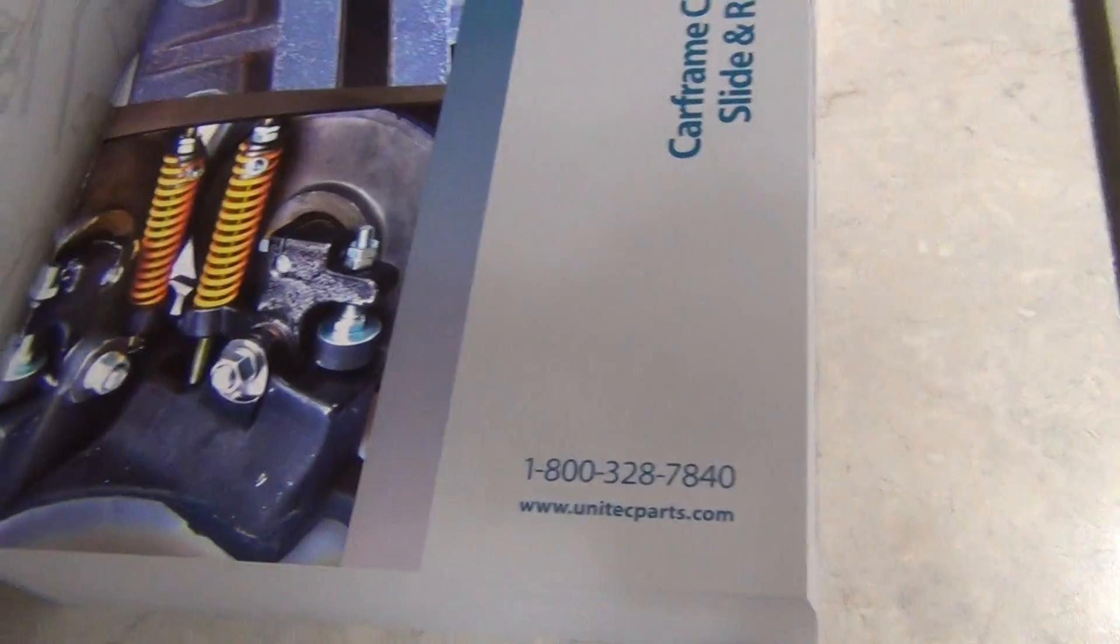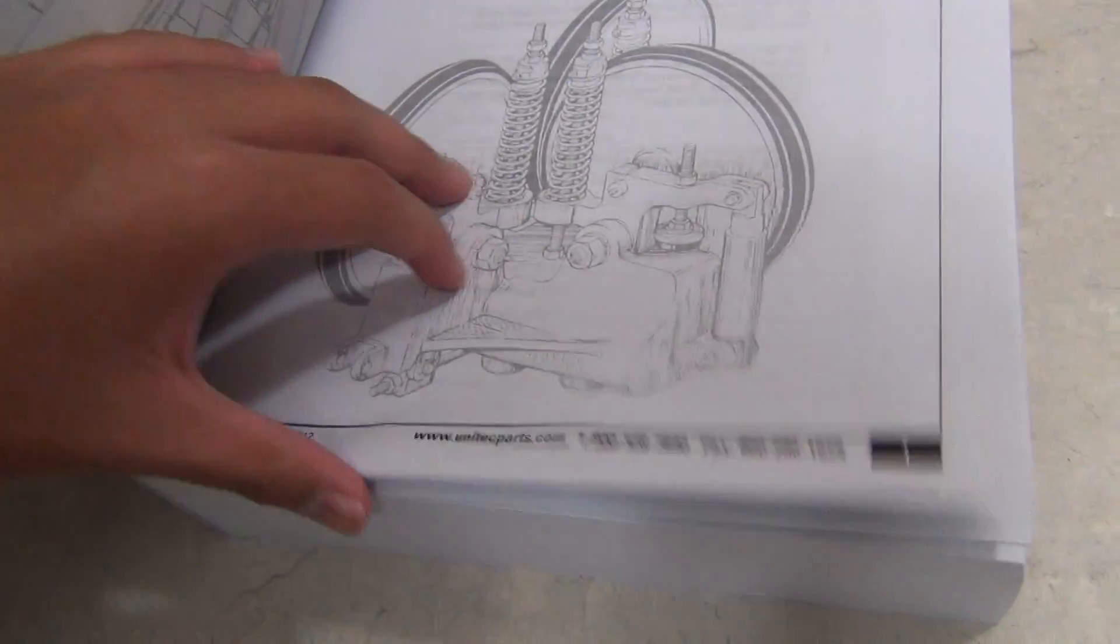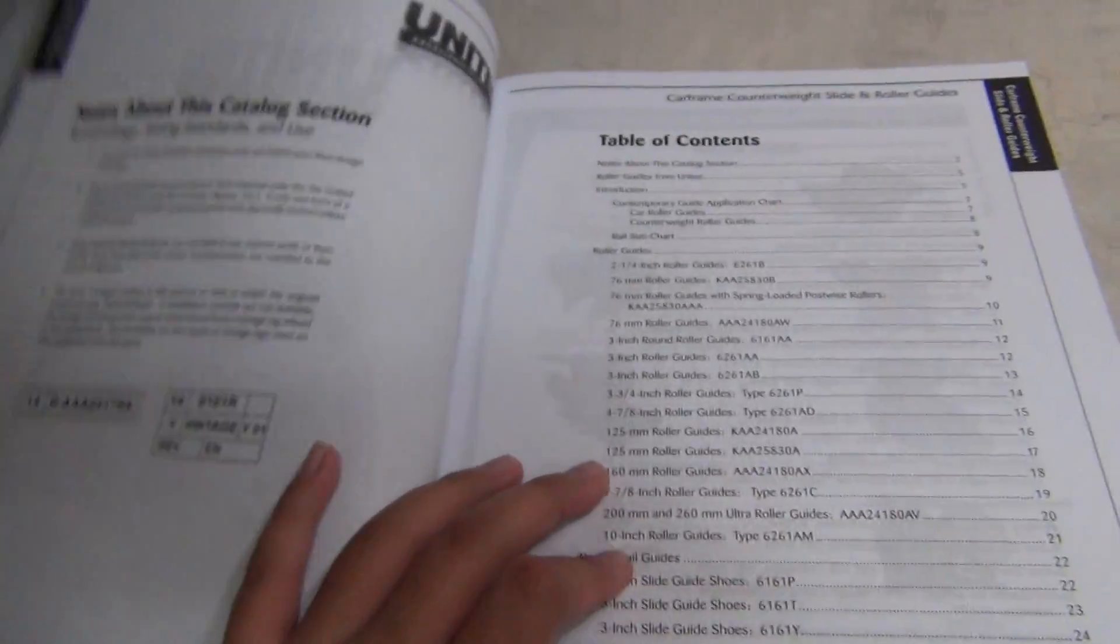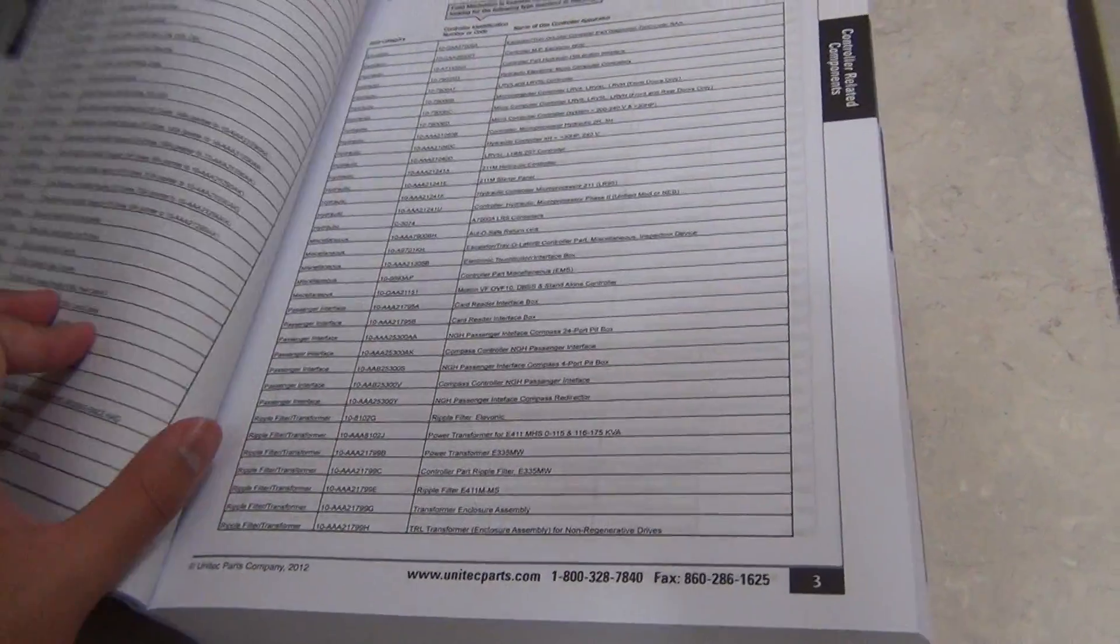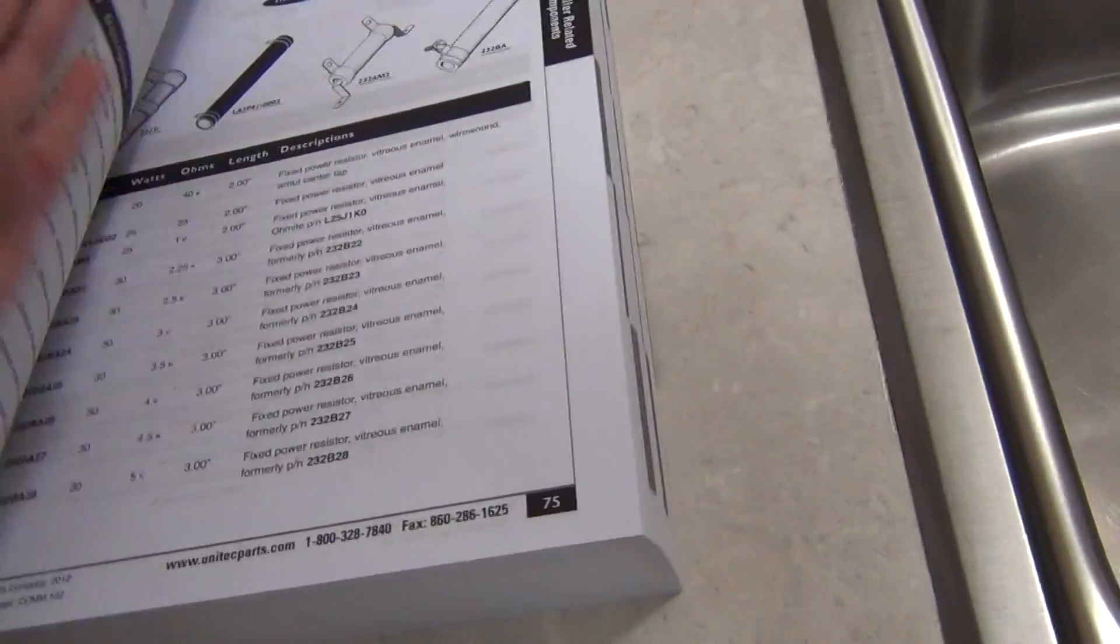See it's a really large catalog. And if you get it online, they give them out for free. Unlike the Adams catalog where you can download the whole catalog, with Unitec you have to download the sections. Let me show you here.